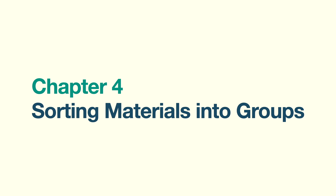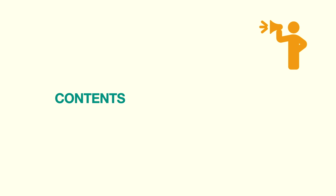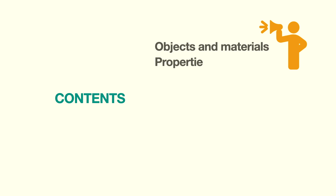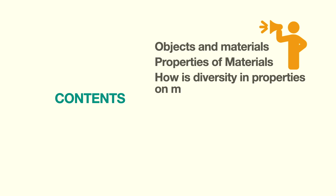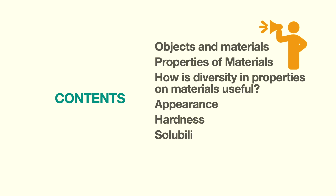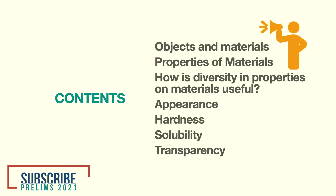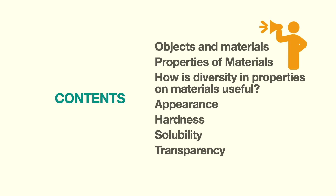Before we start, you must get an idea of what we shall be covering in this video. We will start with what objects and materials are. We will cover what exactly we mean by properties of materials and how diversity in those properties are useful. And finally, we will be dealing with the individual properties themselves: appearance, hardness, solubility, and transparency.